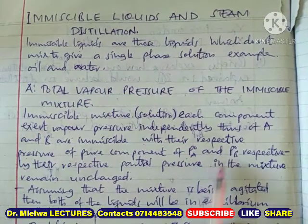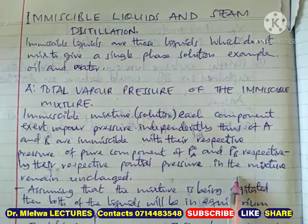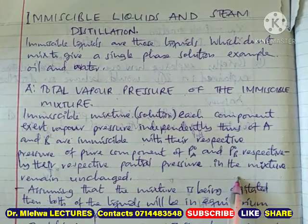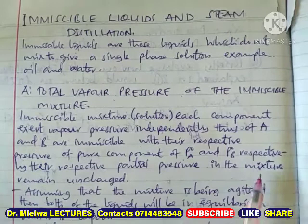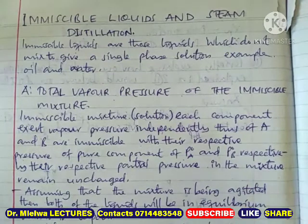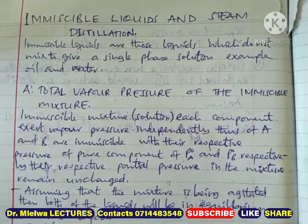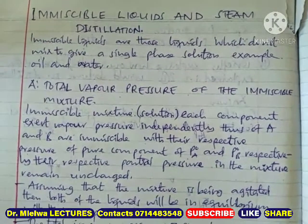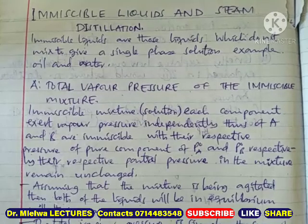Immiscible liquids are those liquids which do not mix to give a single phase solution. An example is oil and water. Oil is an organic compound — an organic liquid. Most organic liquids are immiscible with water.